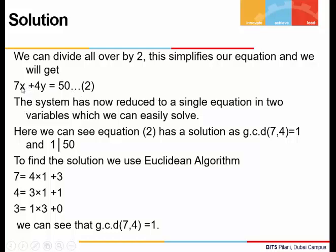We can see that our system has reduced to one single equation in two unknowns x and y. Solving such an equation is not difficult. We'll first check whether it has a solution or not, which we can see obviously has because the GCD of 7 and 4 is 1 and 1 divides the right hand side 50. So the solution exists.